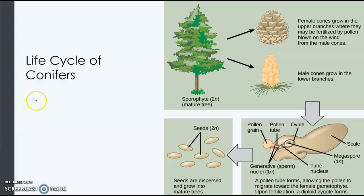Here is an example of a conifer. Conifers are one type of gymnosperm. You can see here that this is a pine tree, and it produces both male and female cones. We recognize the female cones, but the male cones are also produced. If you look at a pine tree carefully, especially during the spring, you will see the male cones that grow on the lower branches — they're not as woody or tough as the female cones. The pollen from the male cone lands on the female cone, down at the base of one of the scales on the cone.